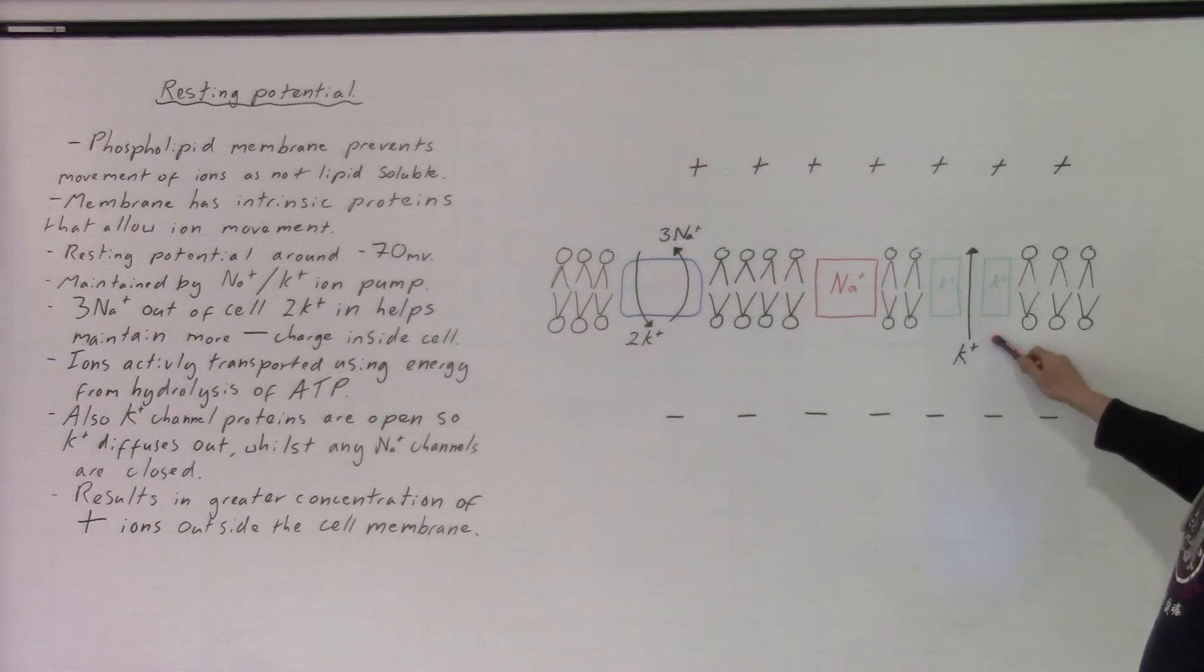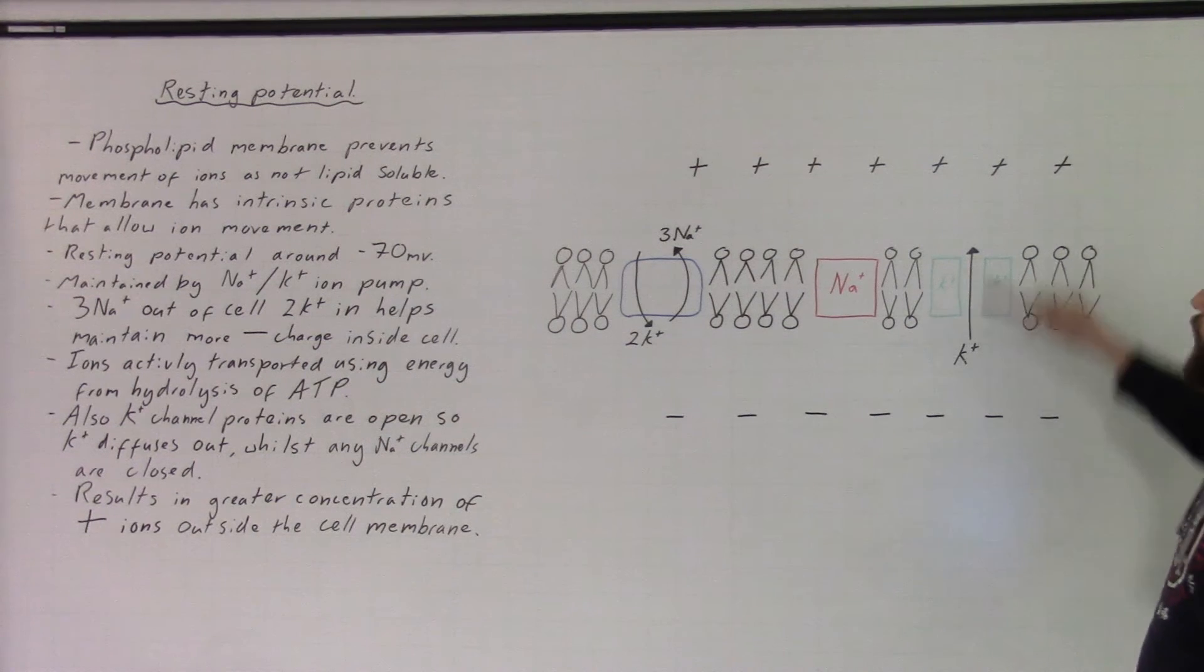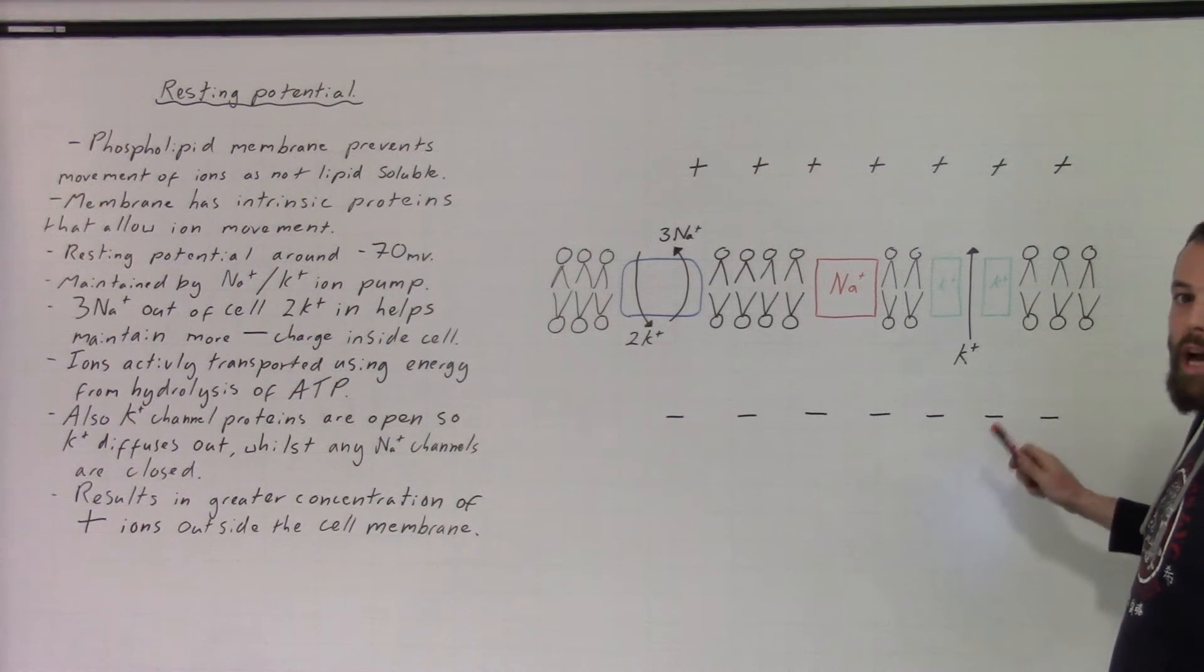Also, a potassium channel is open. This allows diffusion of potassium, a positive ion, to the outside of the cell, helping to maintain the charge gradient.